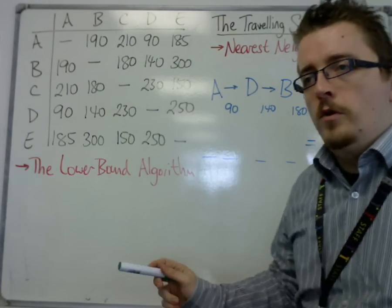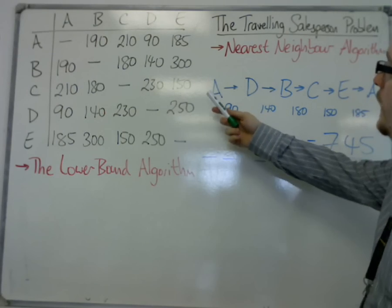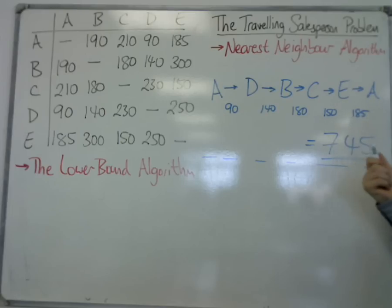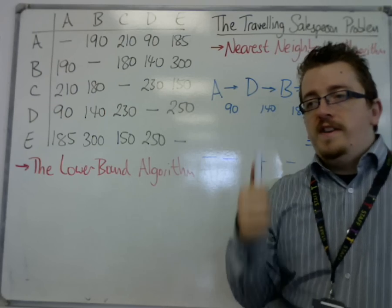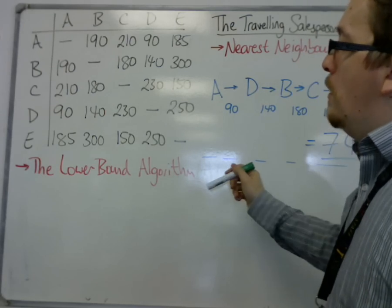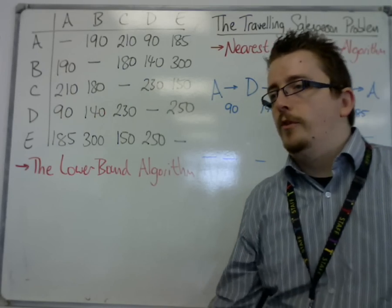In the previous video, we checked out the nearest neighbor algorithm for this matrix, and we got our route, and we got a total of 745. So now I'm going to go through using the lower bound algorithm on this matrix and see what we find, see what conclusion we can come to.